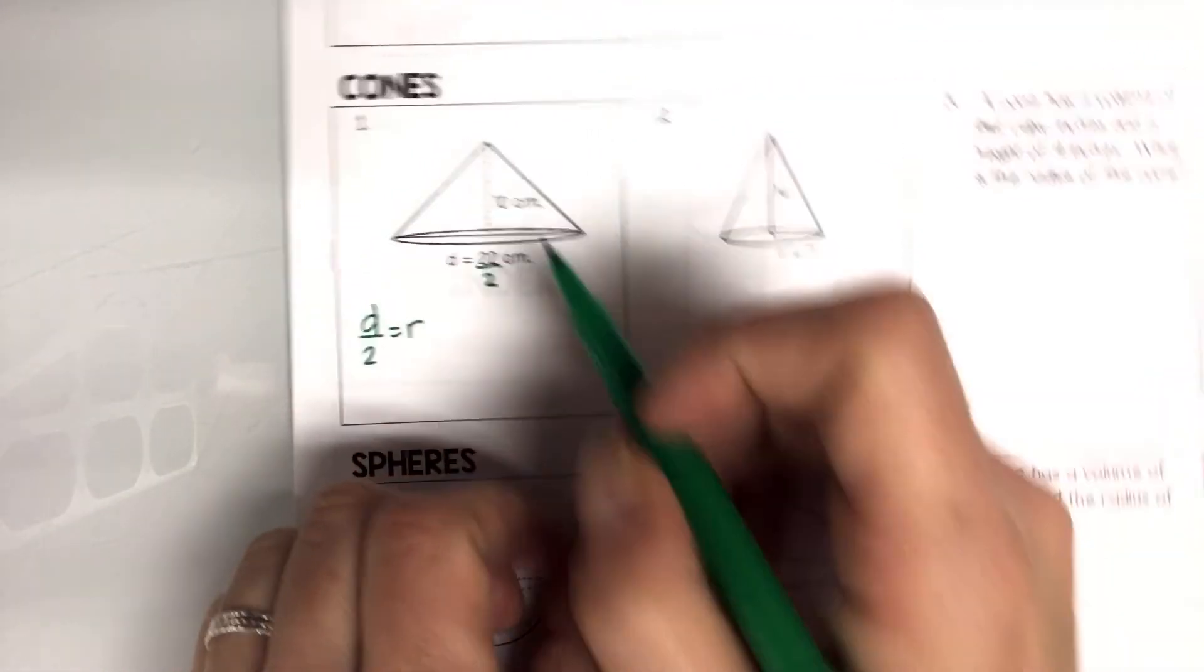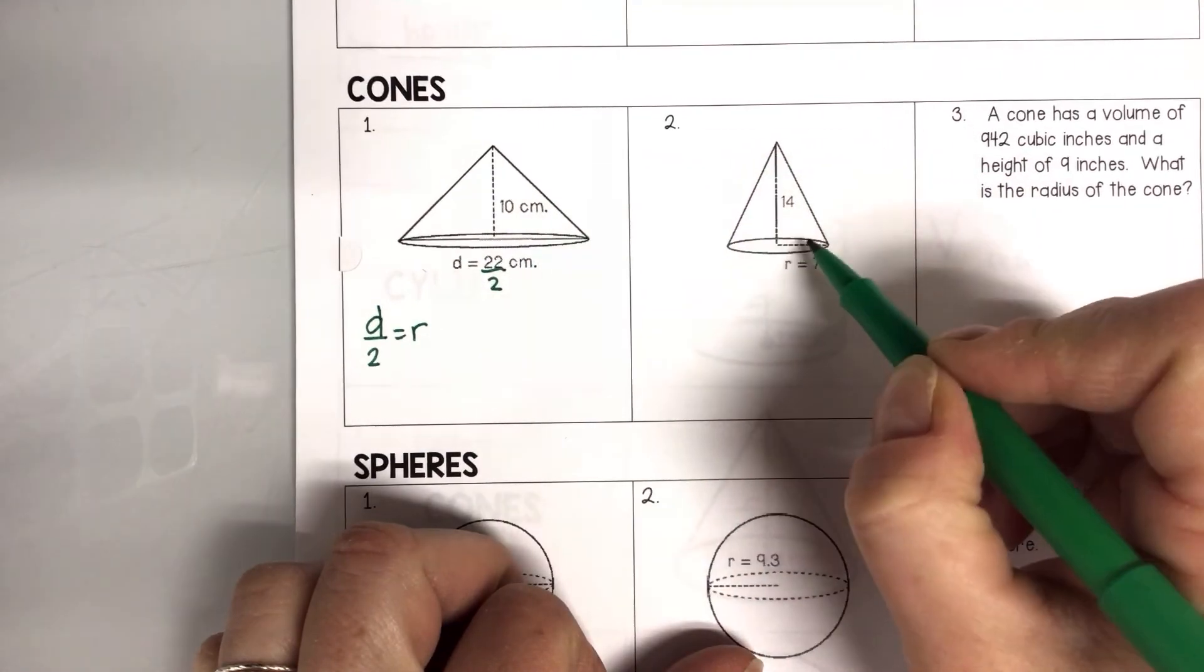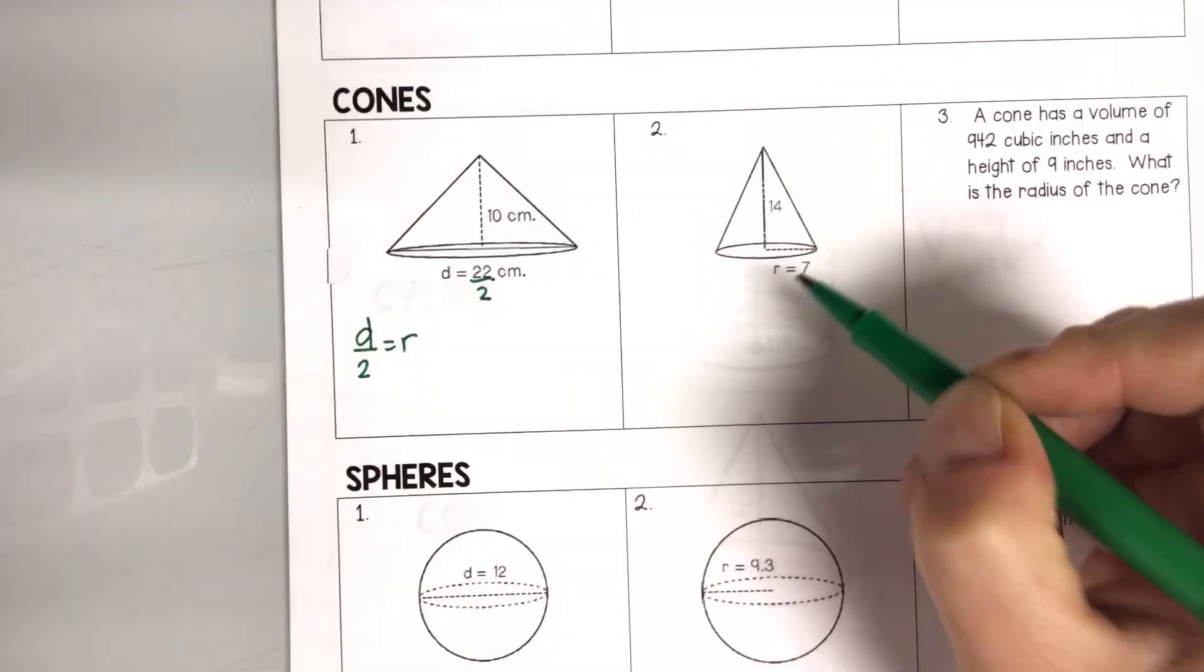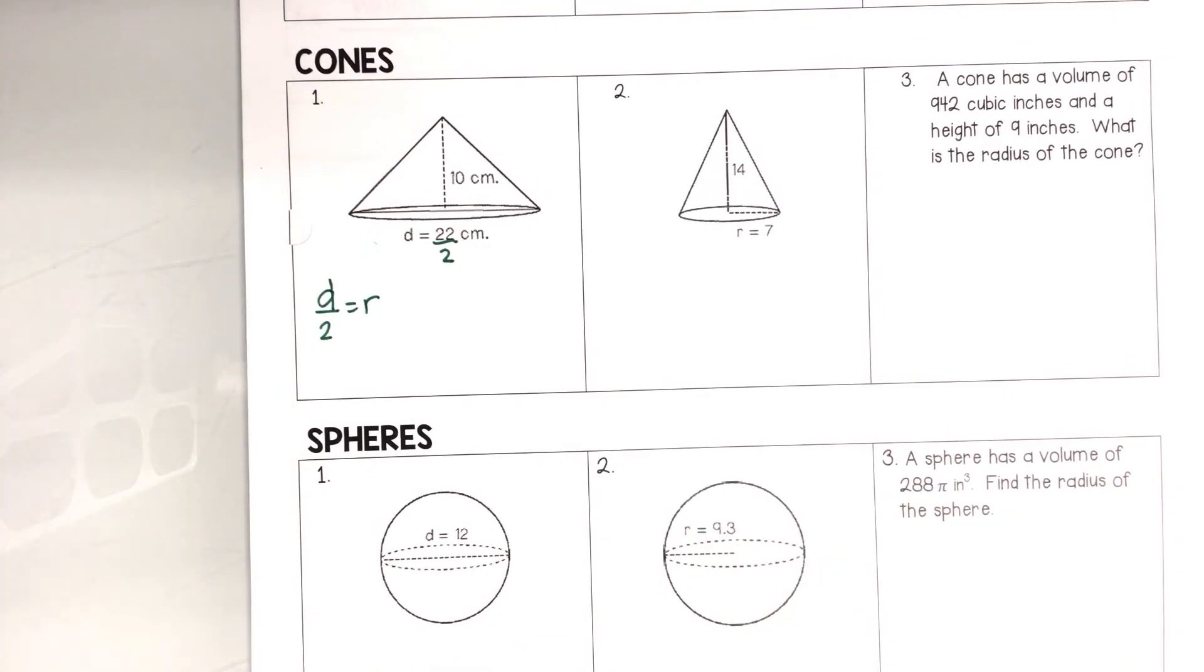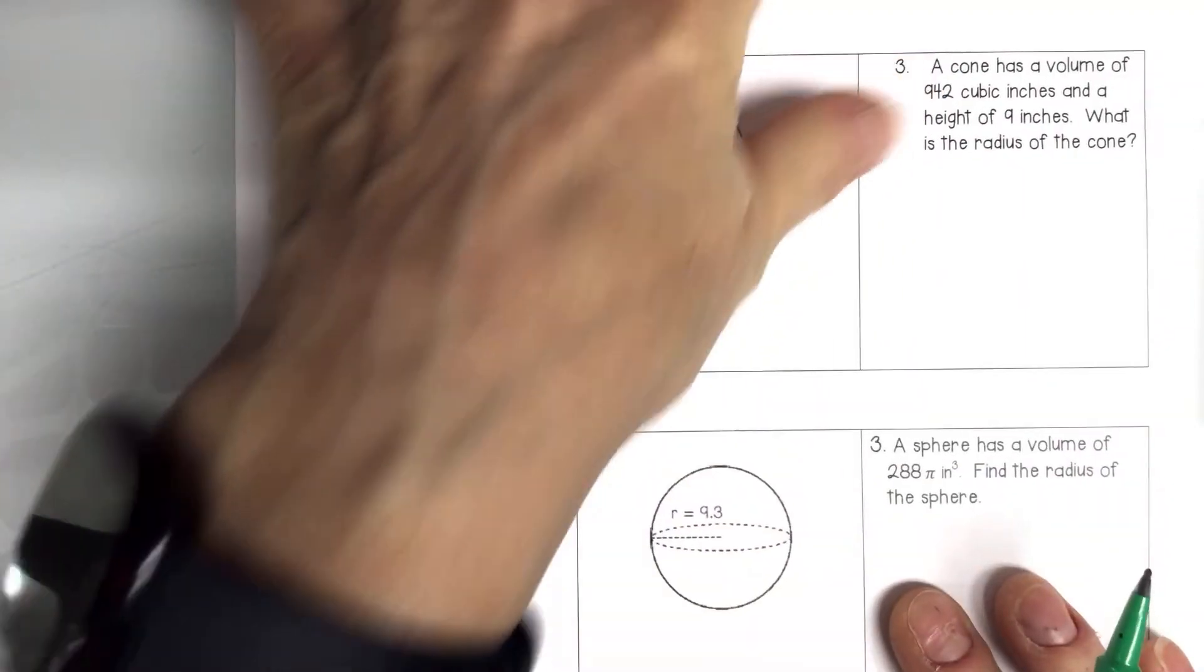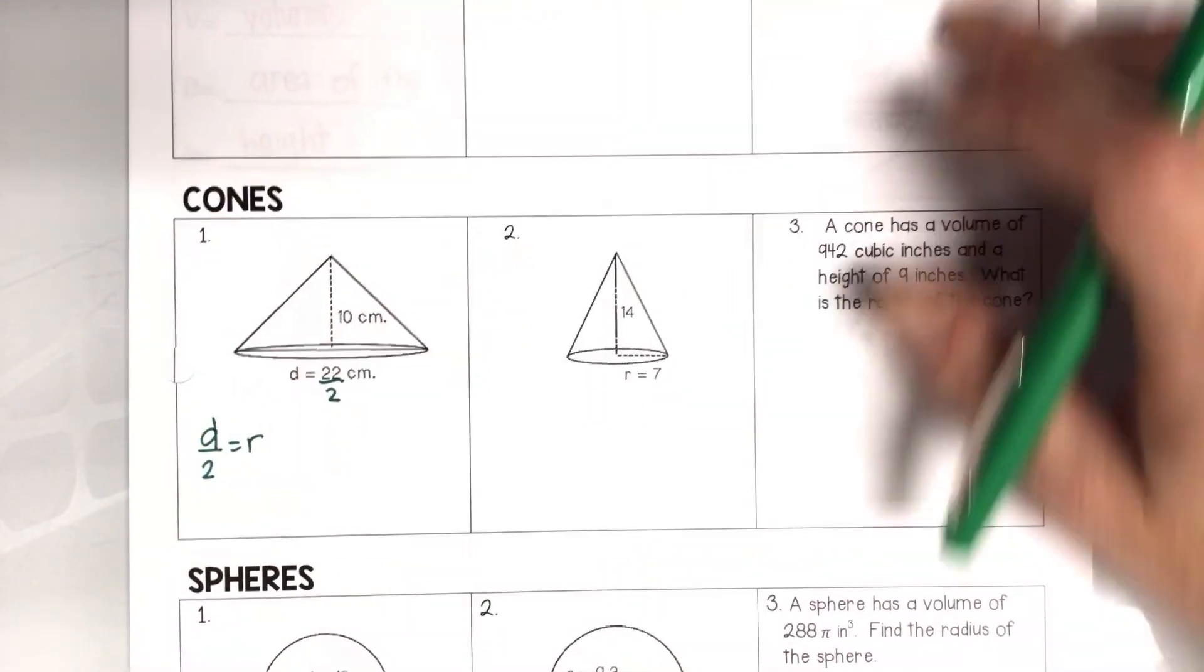And then again, that's my circle. So there's my, that's why that's attached to that. Here's my circle. There's my radius. My diameter is 12. My radius is 9.3. All right. Go ahead and try those. And then if you want to give it a challenge, you can try those.